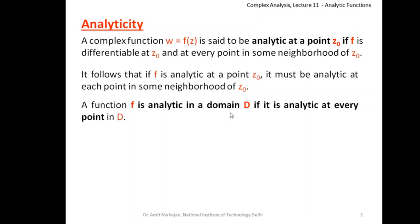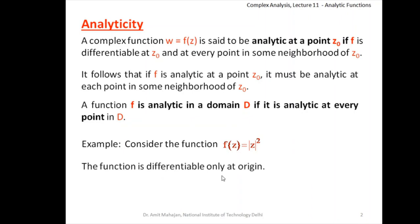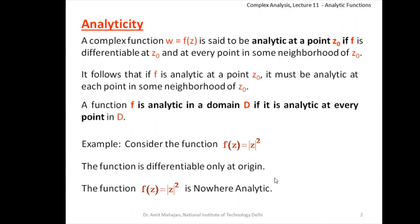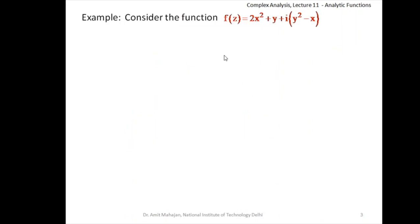For example, consider the function f(z) = |z|². We have already taken this example in previous lectures, and this function is differentiable only at the origin. So if it is differentiable only at the origin, then at the origin, if we draw a neighborhood of any size, there will be points in the neighborhood where the derivative will not exist. So the function is not analytic because we need that at every point in the neighborhood the derivative should exist. Therefore, f(z) = |z|² is nowhere analytic.